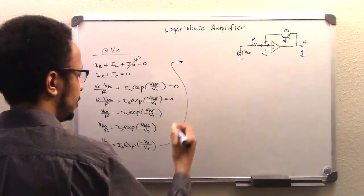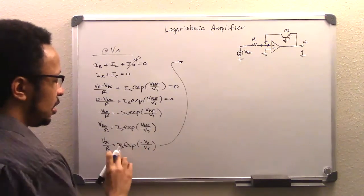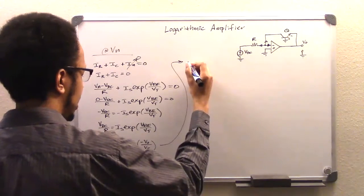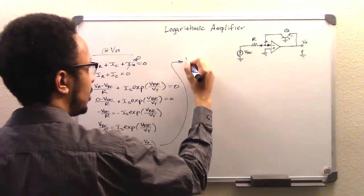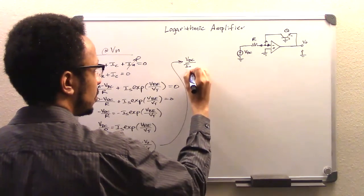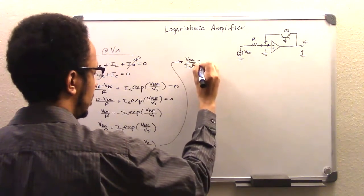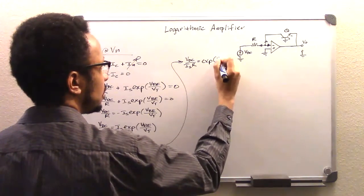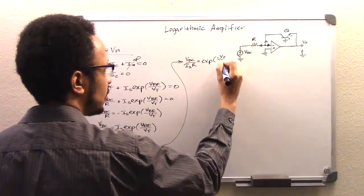So bring this up here and start writing our steps there. So first of all, what we're going to do is we're going to divide out our saturation current IS. And that's going to give us VDC over IS times R equals our exponential negative Vout over VT.